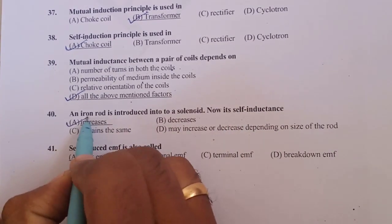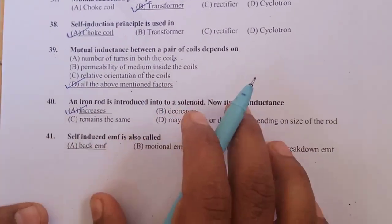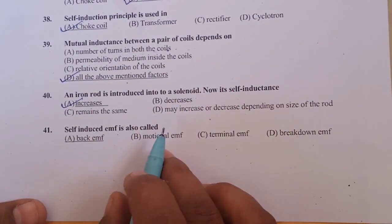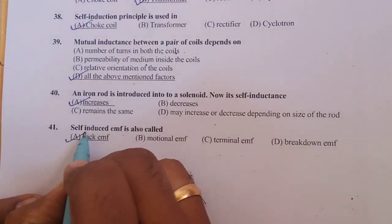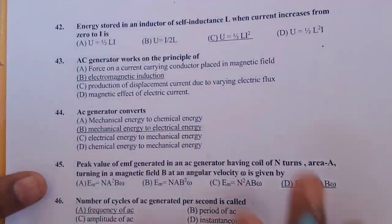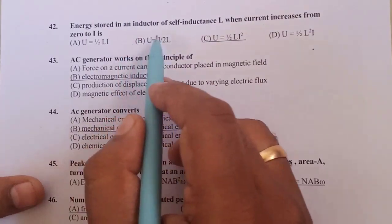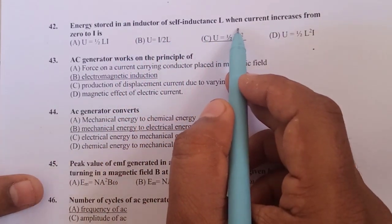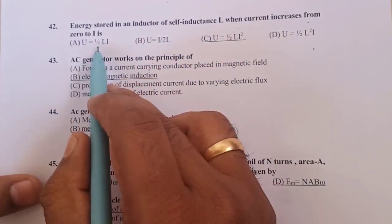Induced EMF is also called back EMF. Question number 42, energy stored in an inductor of self inductance L when current increases from 0 to I is equal to U is equal to half L I square.